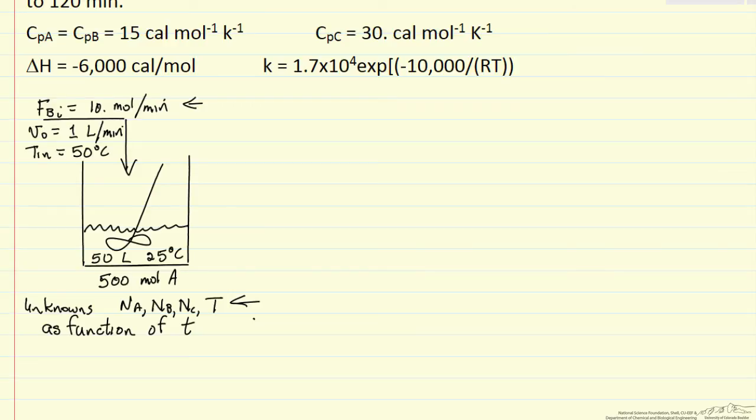What we want to write down first are mole balances for this system. Since we're going to solve this numerically, we're going to write mole balances for each of the components. The change in the total number of moles of A in the reactor with time is the rate of reaction: minus k, the concentration of A times concentration of B, times volume. The number of moles on the left has to be the number of moles on the right.